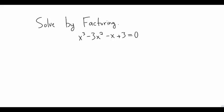Let's do another example: solve by factoring. Looking at the left-hand side, the greatest common factor is 1, so there's nothing to factor out. This is a four-term polynomial.